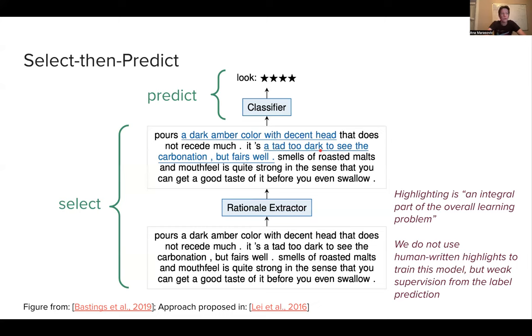So once we do that, and here we have predicted some, we are going to make a prediction based only on those phrases that we have ended up selecting. So you're not going to make a prediction based on the entirety of these beer review. You're just going to make a prediction based on a dark amber color with decent head, a tad too dark to see the carbonation, but it fares well. Everything else will be masked.